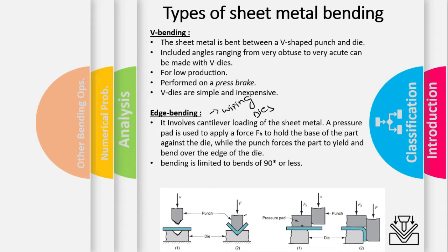In edge bending, there is an additional feature known as a pressure pad. The purpose of the pressure pad is to hold the sheet metal for bending by the punch. It involves cantilever loading, meaning the sheet is supported at one end while free at the other. The pressure pad applies a holding force FH against the die, while the punch exerts force to yield the sheet metal. The maximum bend using edge bending is 90 degrees, though special wiping dies can achieve more. In V-bending, bending beyond 90 degrees is also possible.